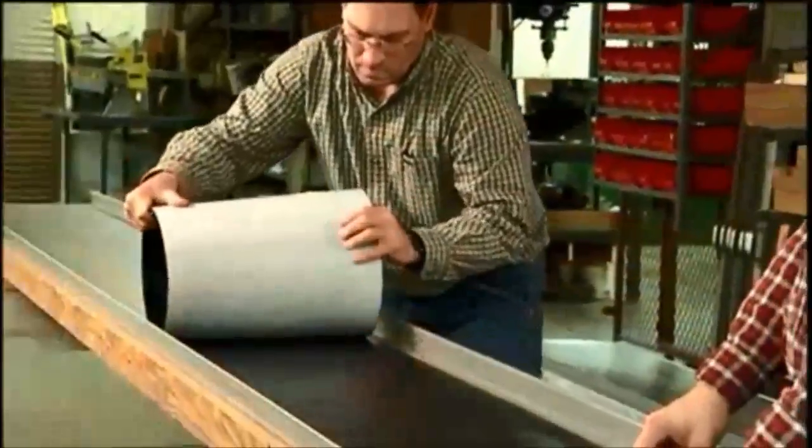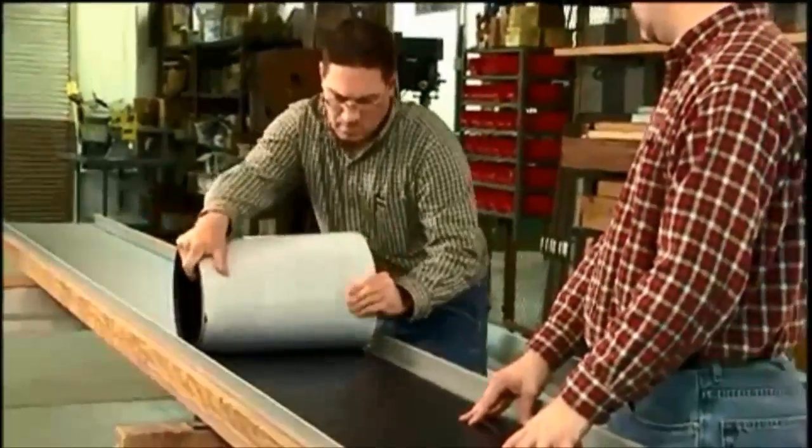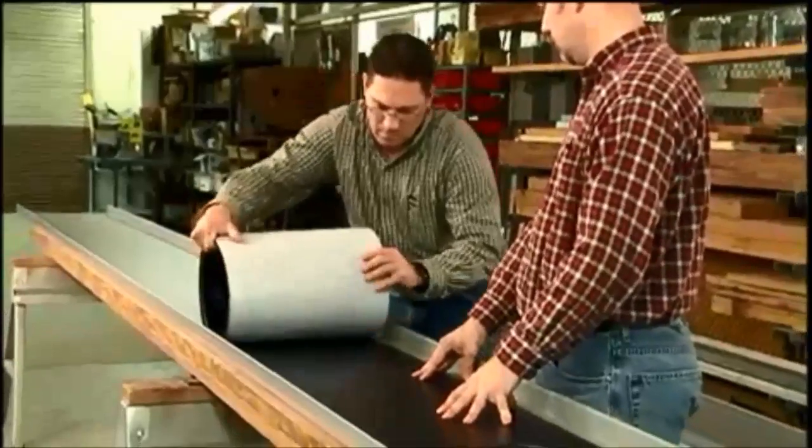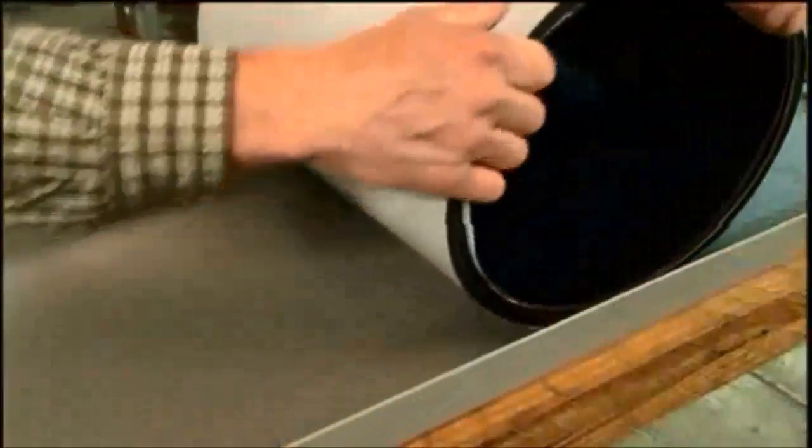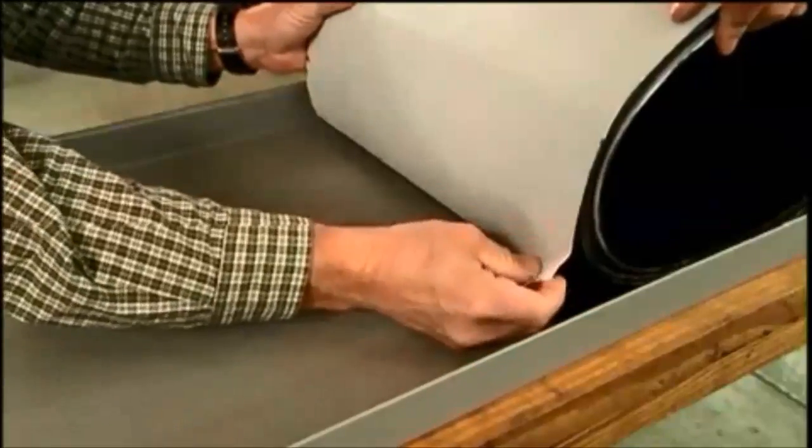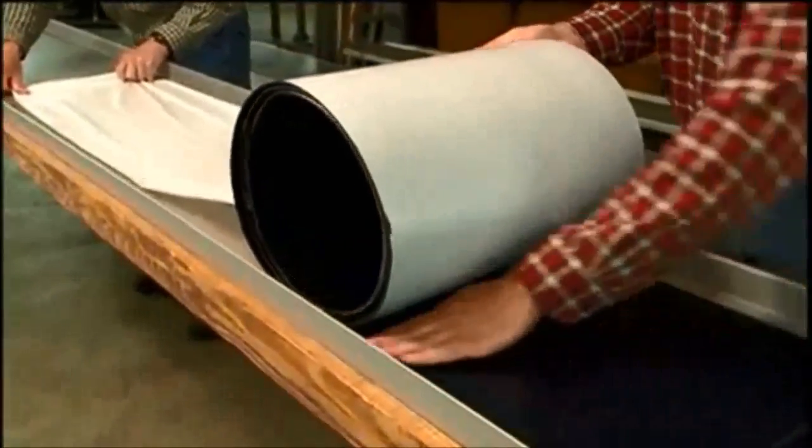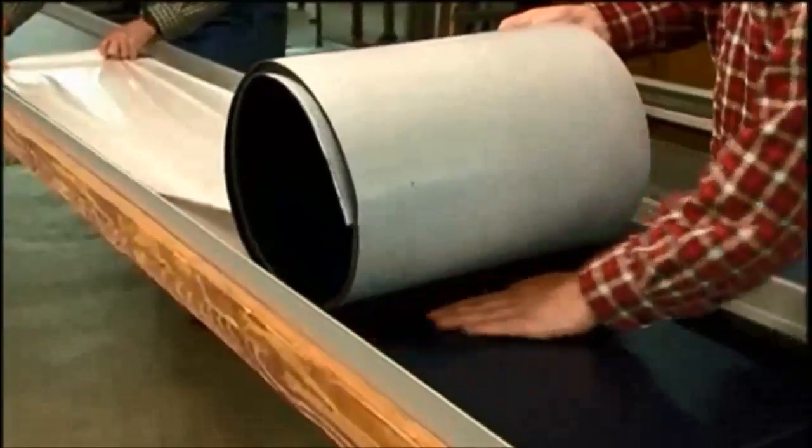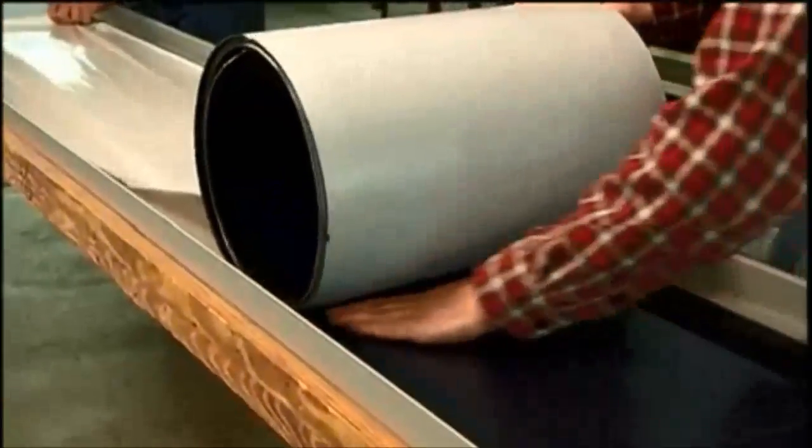Be careful not to roll the laminate to a diameter smaller than 18 inches. Begin to peel back the remaining release paper and then carefully lay the laminate into place, removing the release paper as the laminate is unrolled.